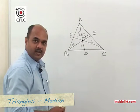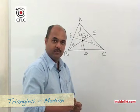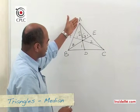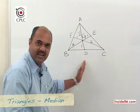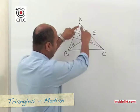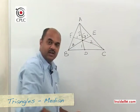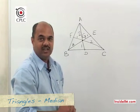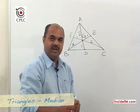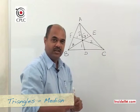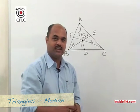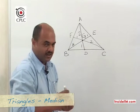Another important property of the median is that whenever we draw a median — for example, AD — it divides the original triangle ABC into two triangles of equal area. So every median divides the triangle into two equal parts.